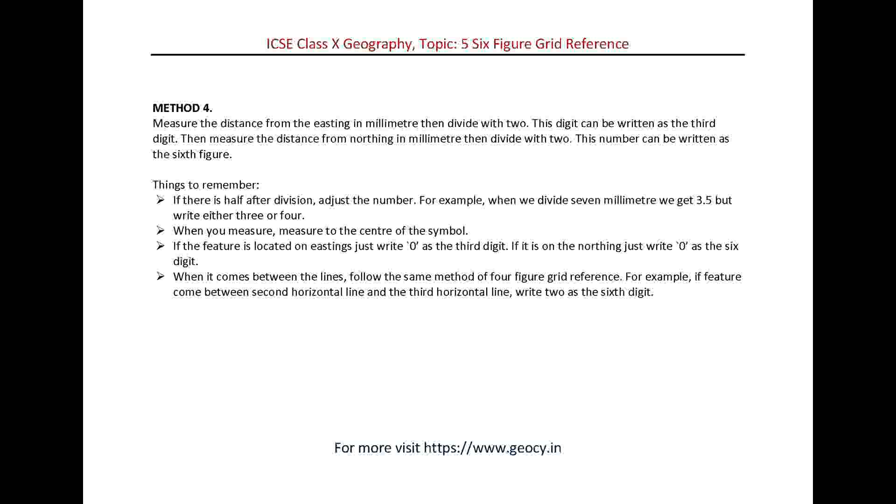Things to remember: If there is a half after division, adjust the number. For example, when we divide 7 millimeters we get 3.5 but write either 3 or 4. When you measure, measure to the center of the symbol. If the feature is located on Eastings just write 0 as the 3rd digit. If it is on the Northing just write 0 as the 6th digit.